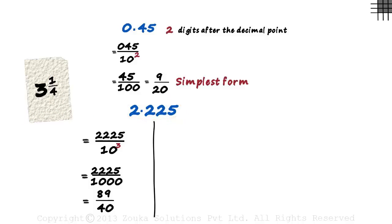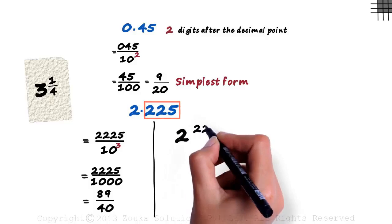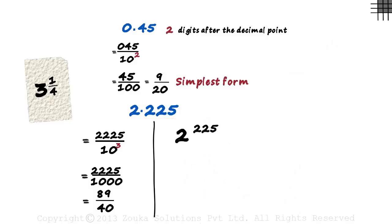It's very simple. The whole part is the number to the left of the decimal point. 2 becomes the whole part. The numerator of the fractional part is the number to the right of the decimal point. It's 225. And guess what? The denominator of the fractional part is the same as the denominator in the previous case, 10 raised to 3. Again, the power of 10 is equal to the number of digits after the decimal point.